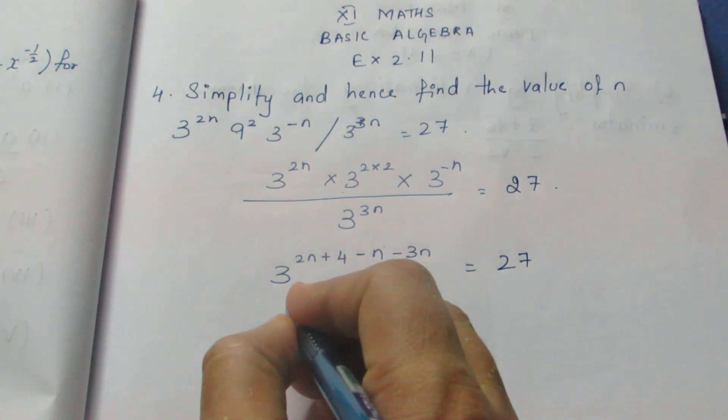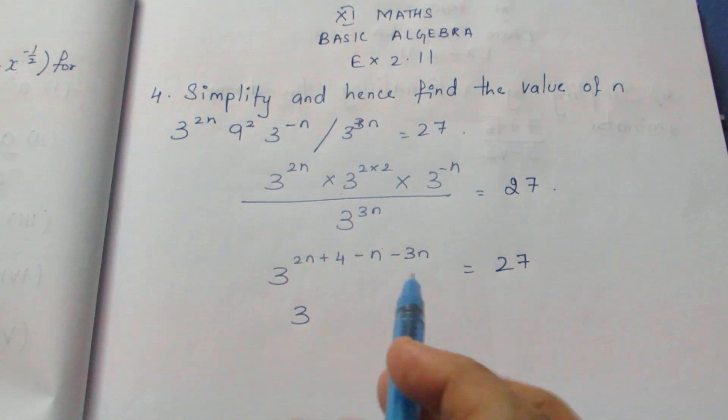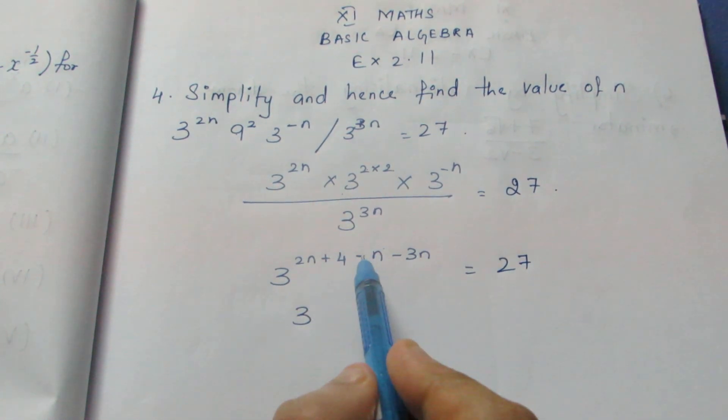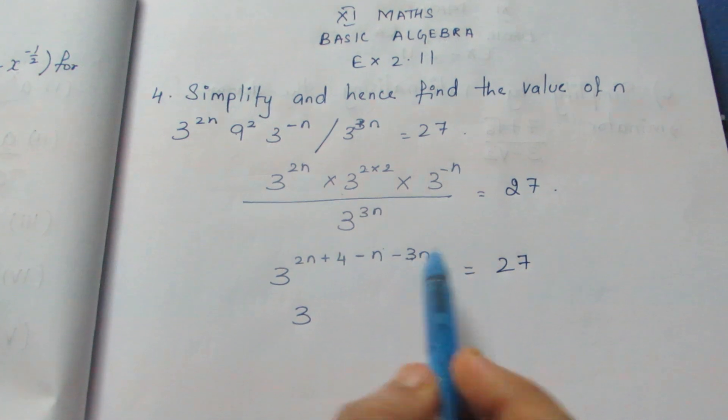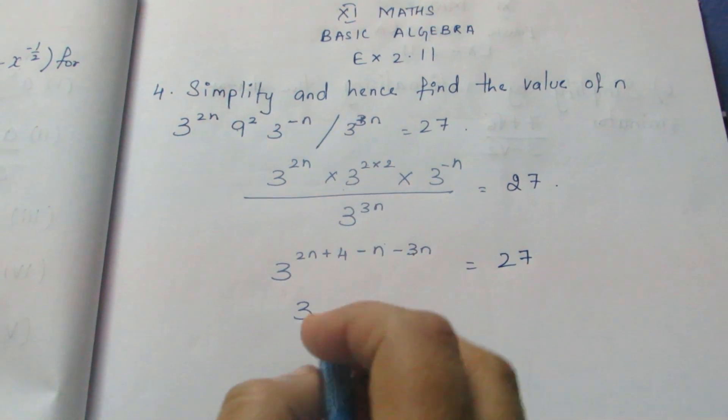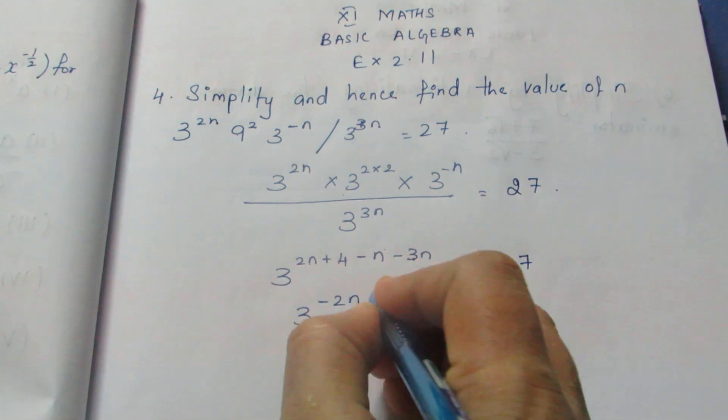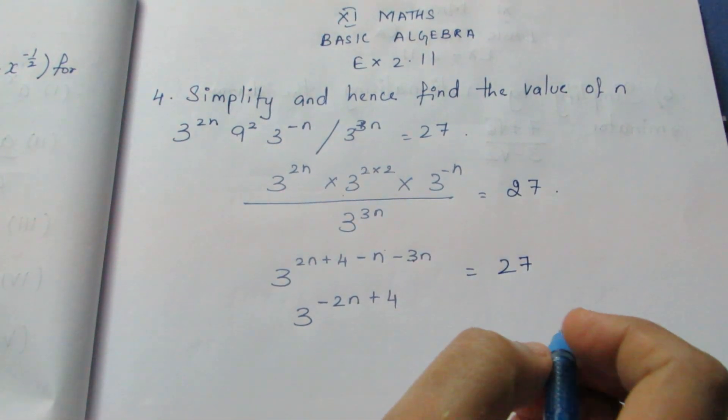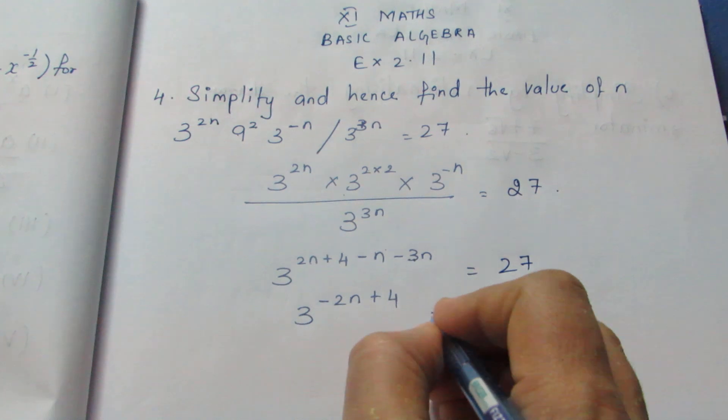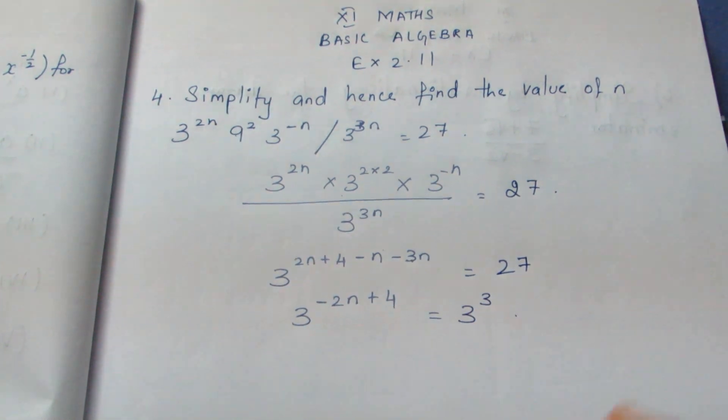So we'll solve it. 3 power what? Combining exponents: 2n plus 4 minus n minus 3n gives us minus 2n plus 4. So 3 power minus 2n plus 4 equals 3 power 3.